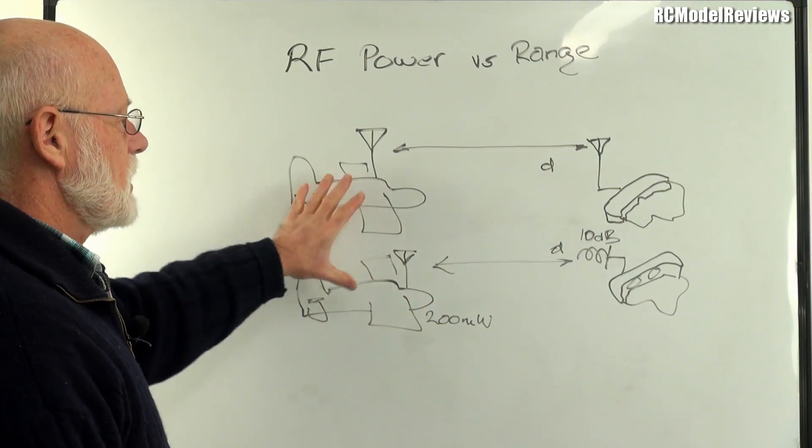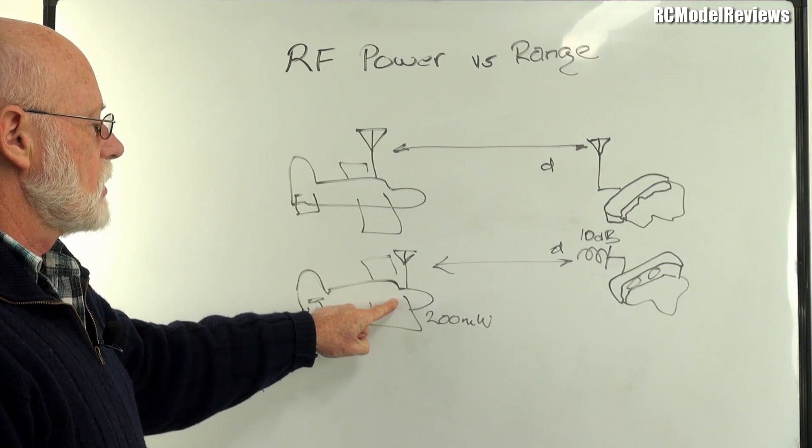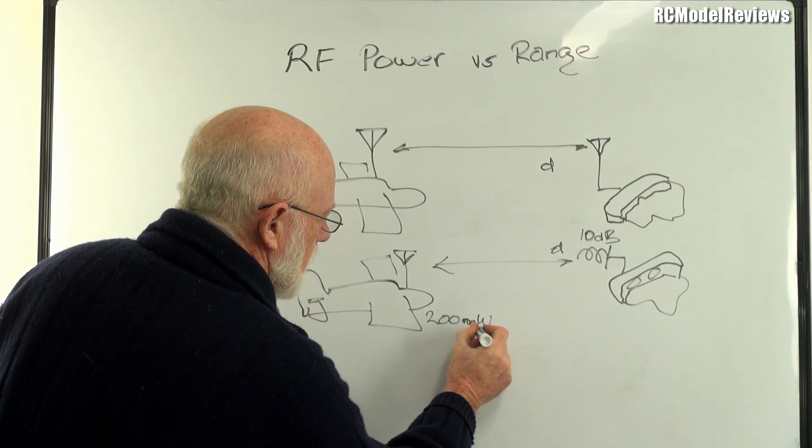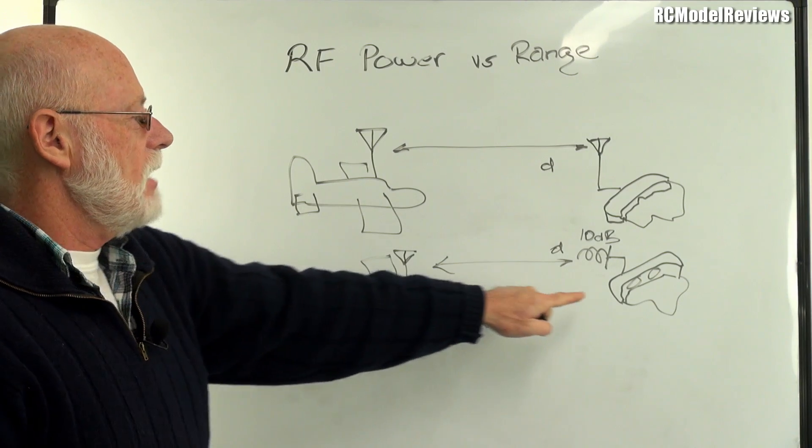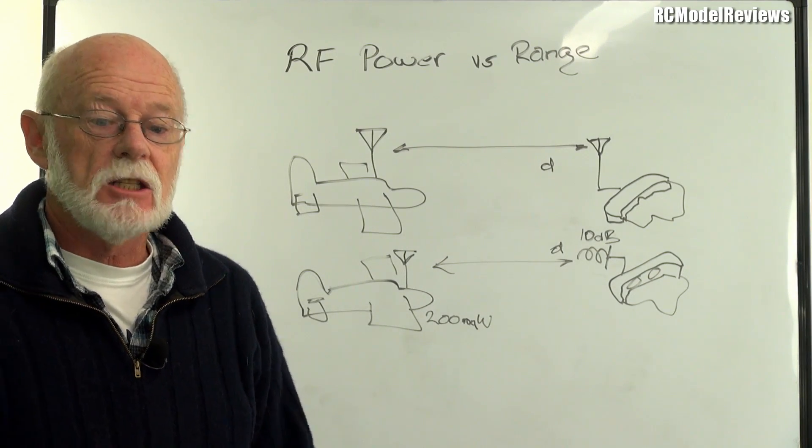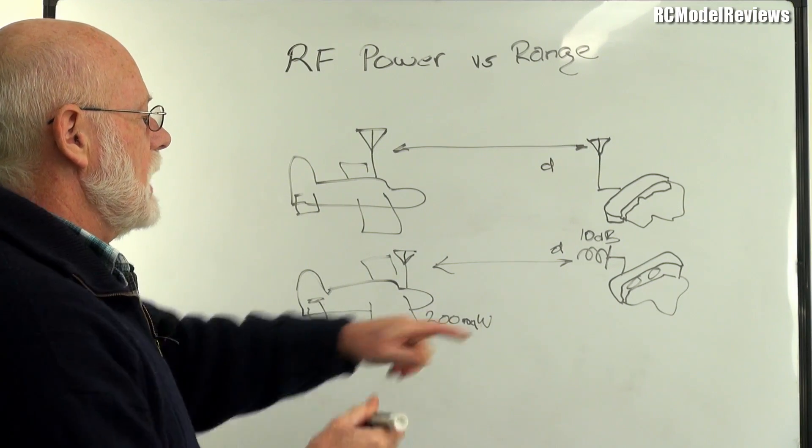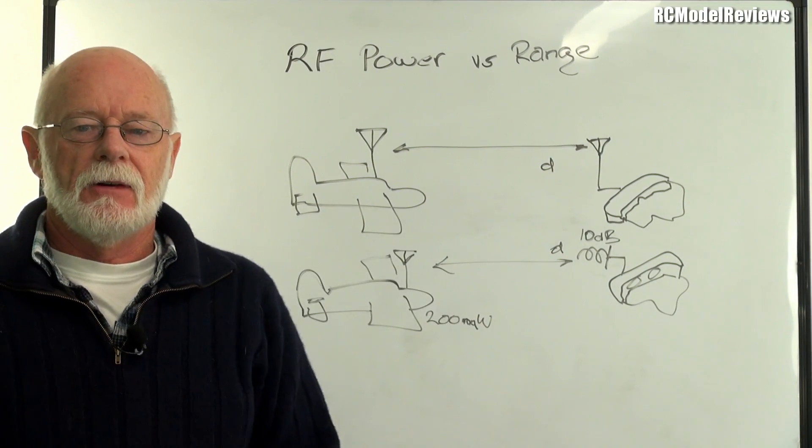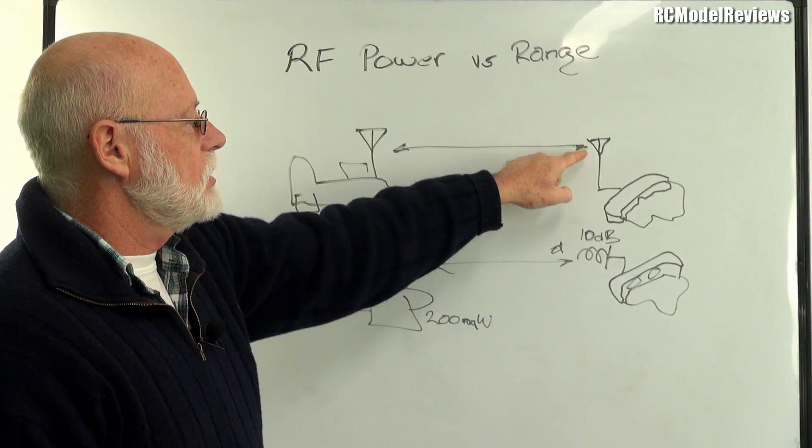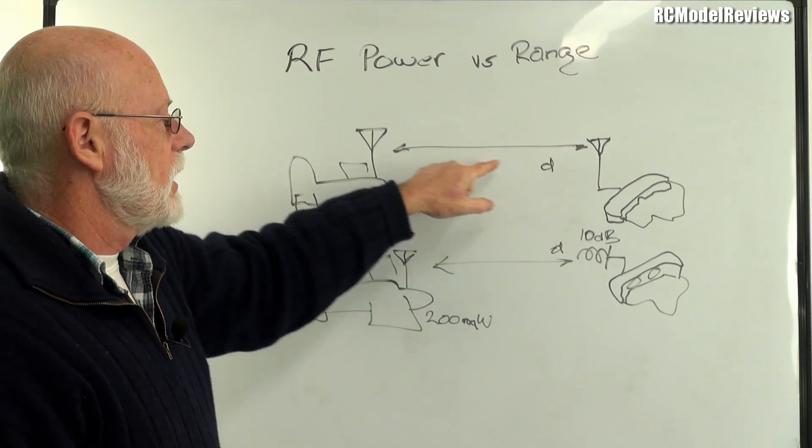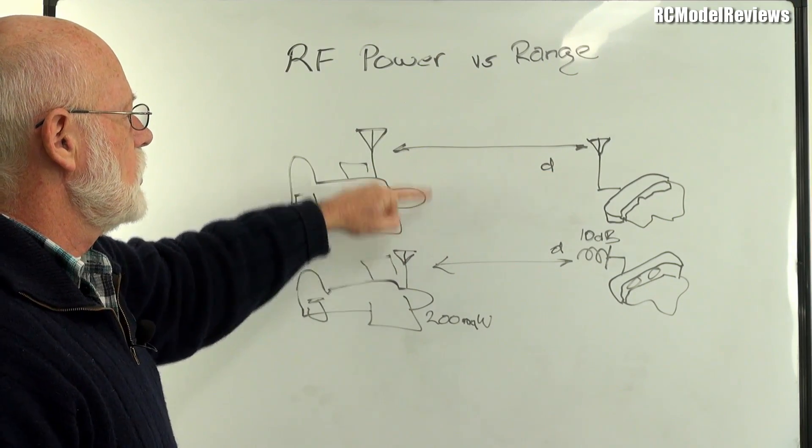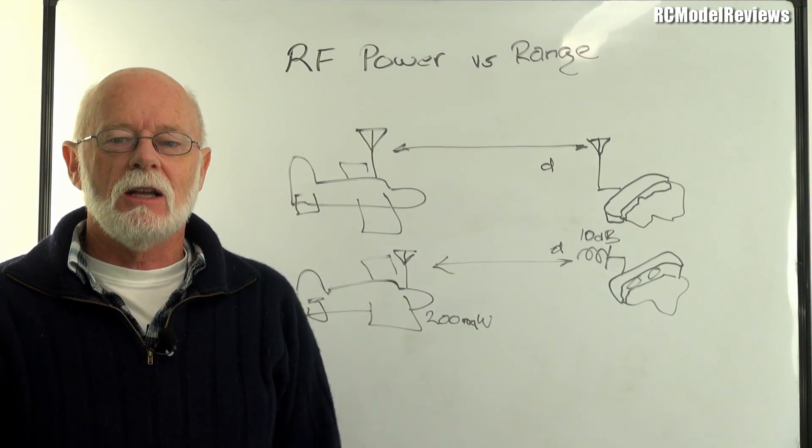So let me just clear the whiteboard for a moment. Right now I've drawn a couple of setups here. Here's a plane with a 200 milliwatt video transmitter. You can't read my writing because I'm crap. 200 milliwatt video transmitter. And over here we've got a set of goggles with a helical that has 10 decibels of gain. Now we'll get a distance d out of that. But up here, if we didn't have that helical, if we use just an ordinary omnidirectional antenna, isotropic, no gain antenna, right? How much power would we have to use to get the same range?